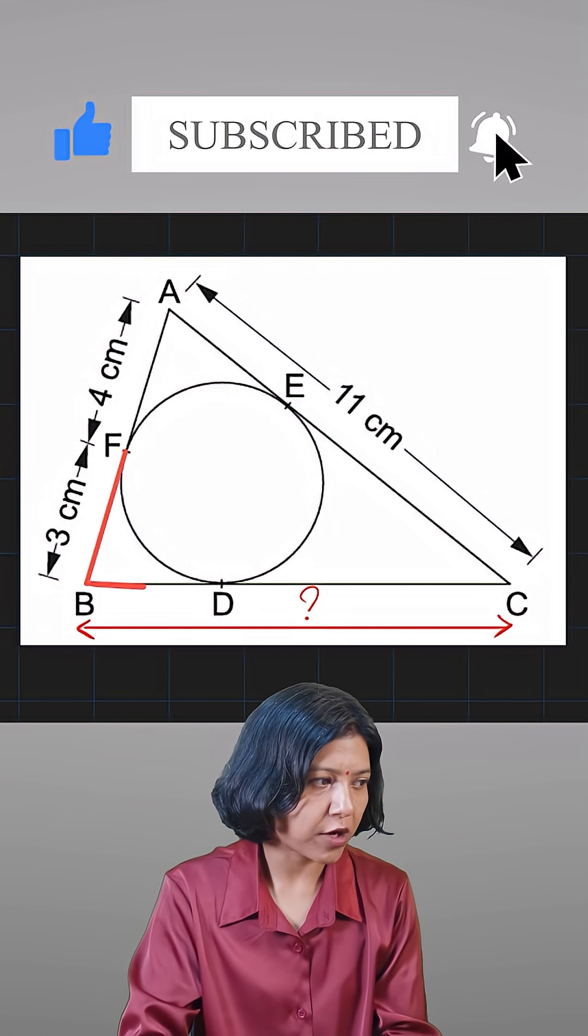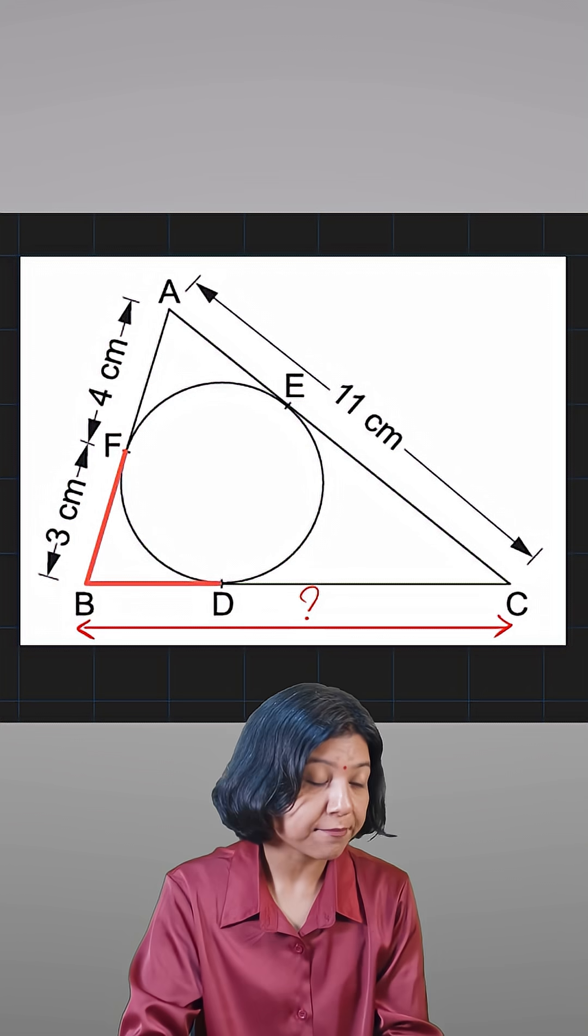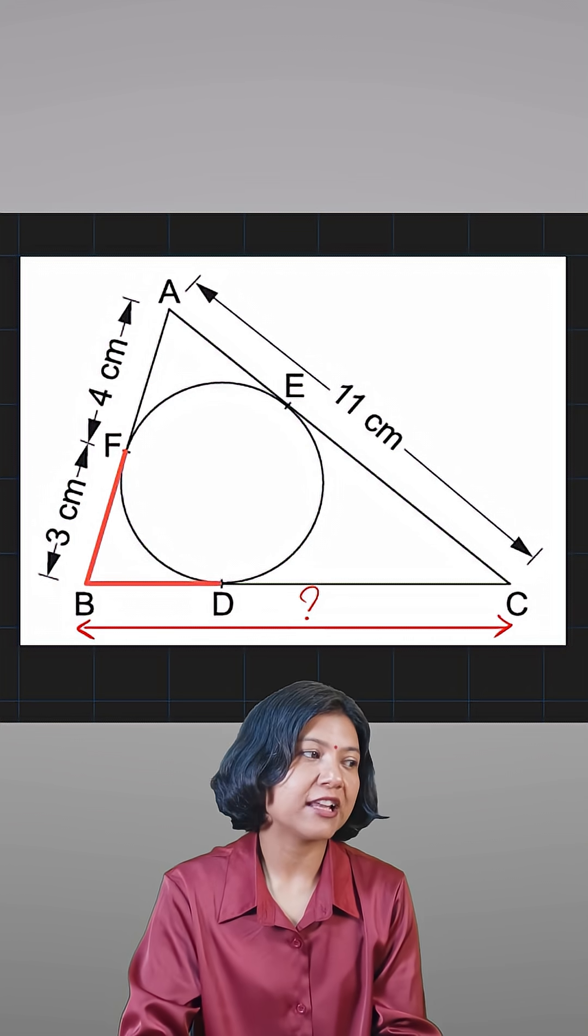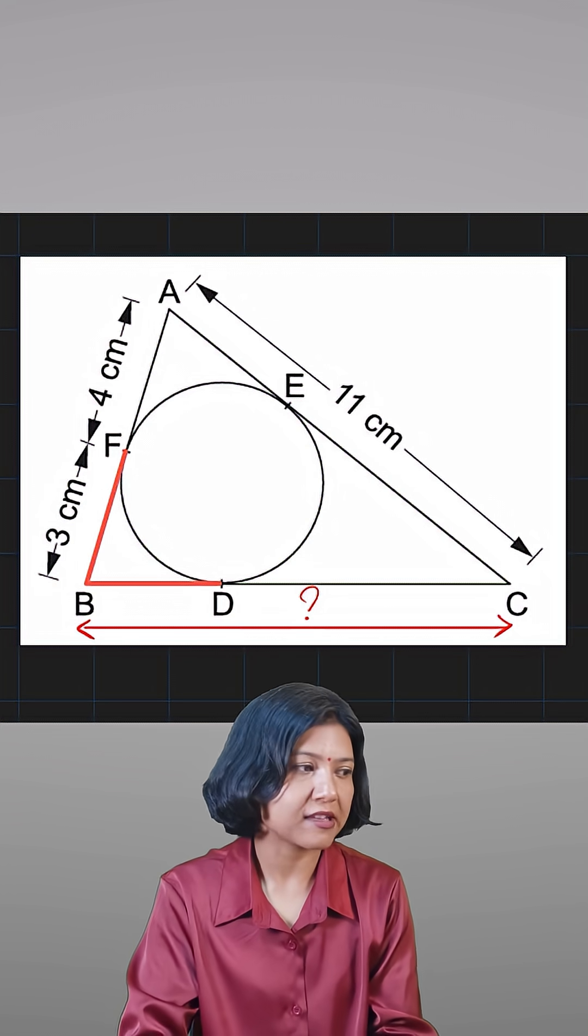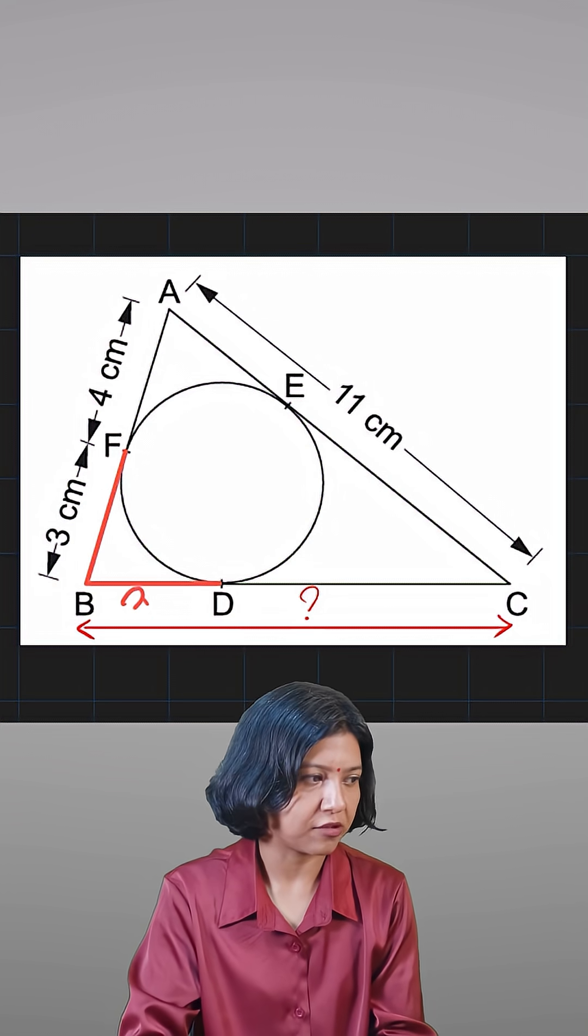If you look at point B, from point B we have two tangents coming up, BD and BF. So if you know the length of BF is 3, tangents coming from an external point are always equal, so BD also has to be 3.